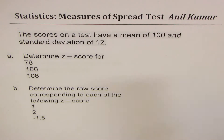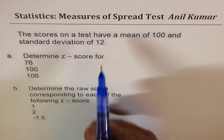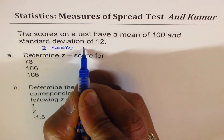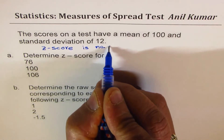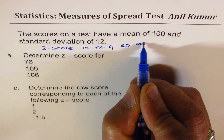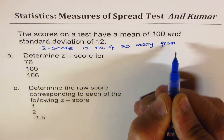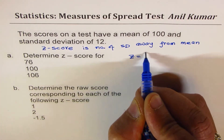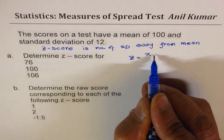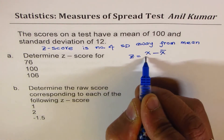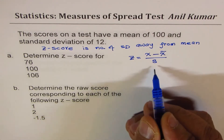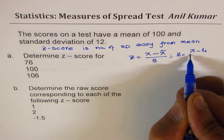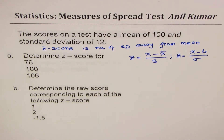Let us first understand what is Z-score. Z-score is basically the number of standard deviations away from the mean. The formula for Z-score is Z equals X minus the mean, divided by standard deviation — that is for sample data. And if you have population, then it is X minus mu, which is the mean, over the standard deviation.